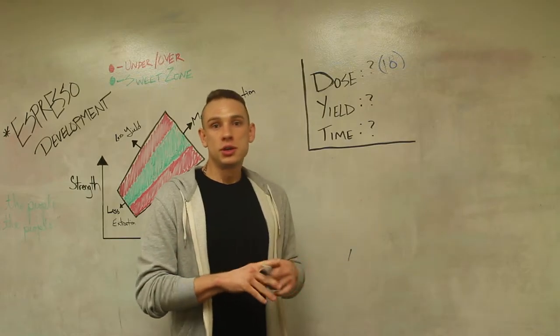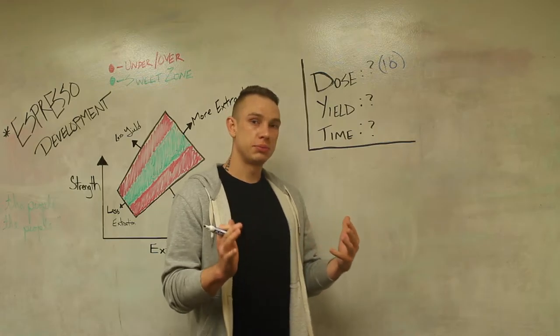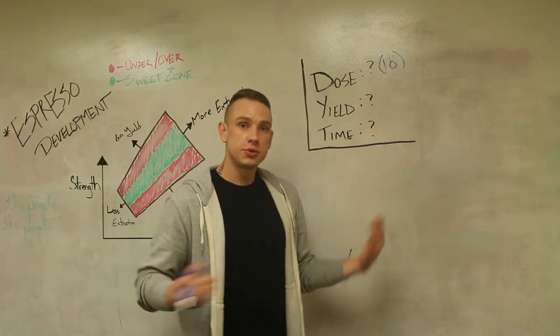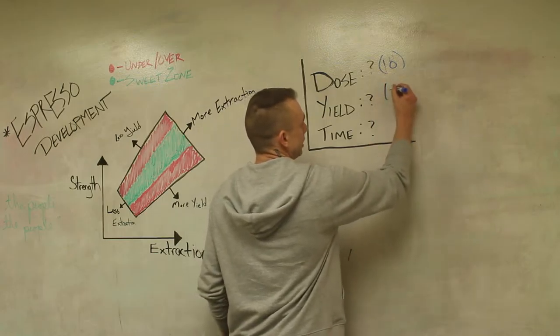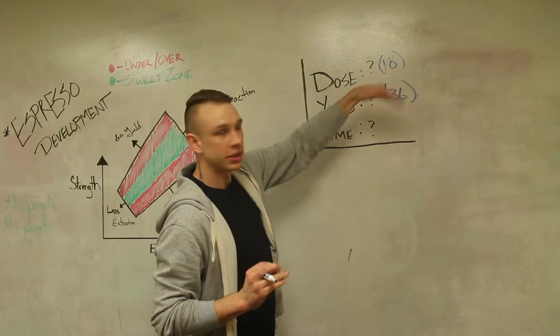What I always do with any coffee I get, outside of talking to the roaster or the company that I get it from, which should always be your go-to, is I do a 1 to 2 ratio. So I go ahead and walk in at 36 grams, 18 grams in, 36 gram yield.